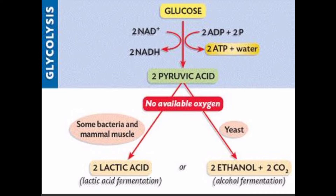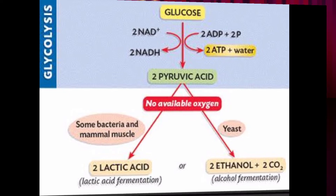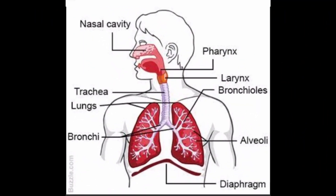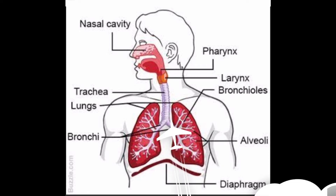Now let us discuss the mechanism of breathing. The human respiratory system begins from the nose cavities called nostrils. Air from the nasal cavity enters into the pharynx and then into the trachea or windpipe. The trachea runs down the neck and divides into two tubes called bronchi. Each bronchus is connected to a lung. In the lungs, each bronchus divides into a large number of thin tubes called bronchioles. The bronchioles have tiny air sacs at their ends called alveoli.